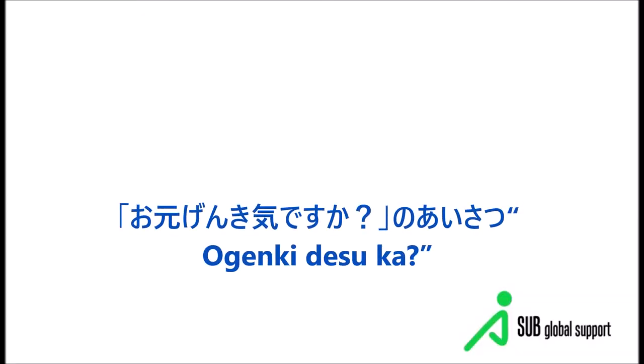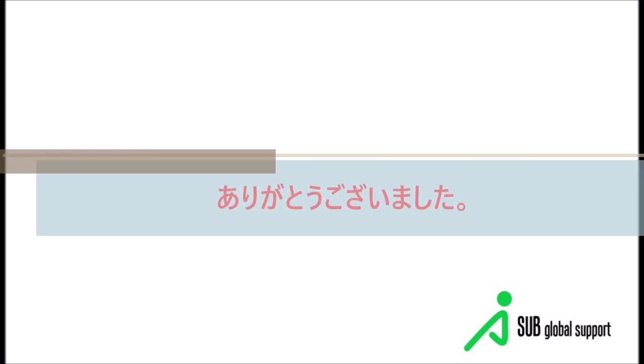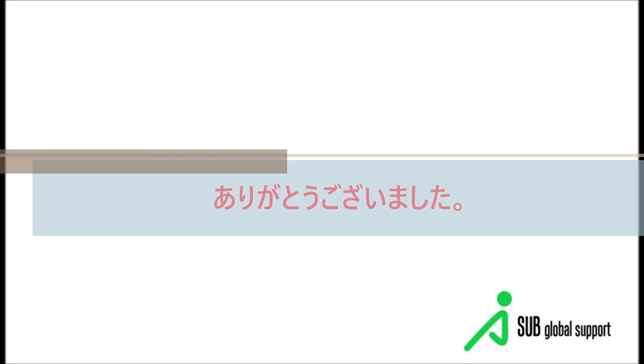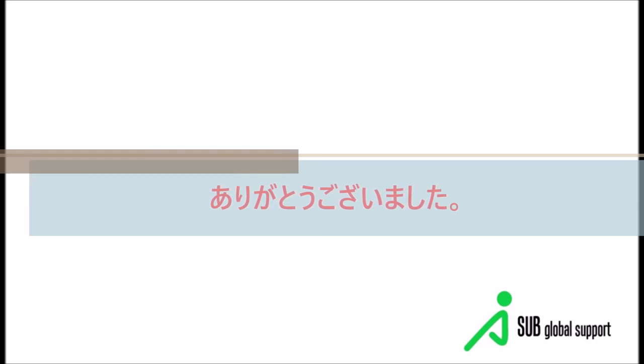Lastly in lesson 103 — the phrase 'O-genki desu ka' means 'Kumusta ka' or 'How are you.' You use this for someone you haven't seen or spoken to in a long time, when you want to check in on them. Thank you for watching. I hope you learned something. Arigato gozaimashita.